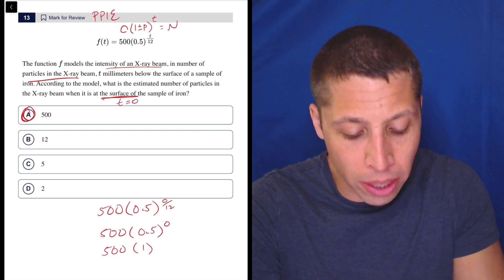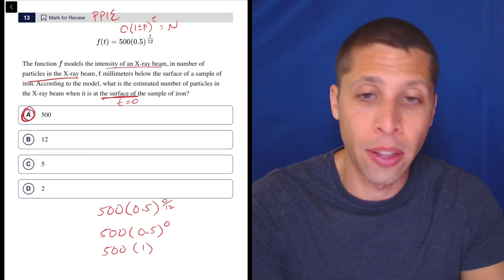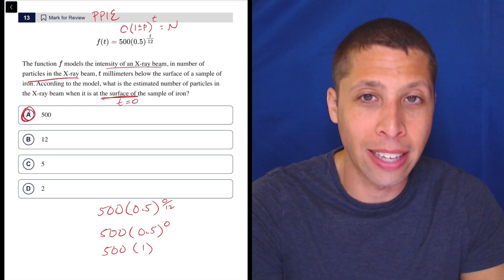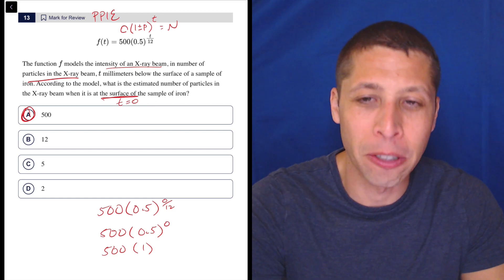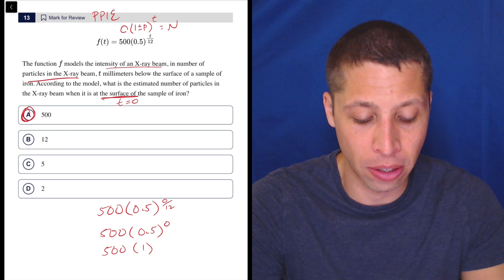But this will equal whatever the new value is. And in this case, it works a little bit differently. It's not like an original number of millimeters and then a new number of millimeters, but it's still exponential. So it still behaves very similarly.